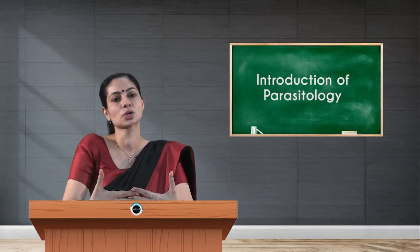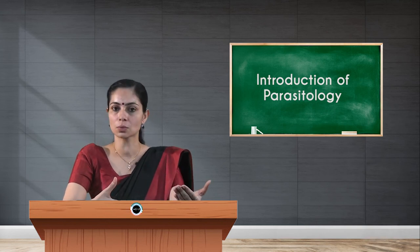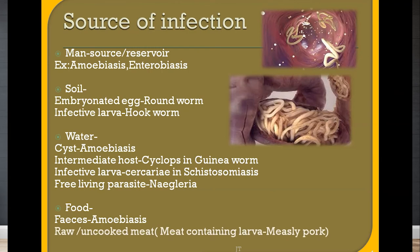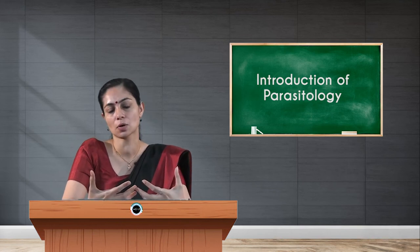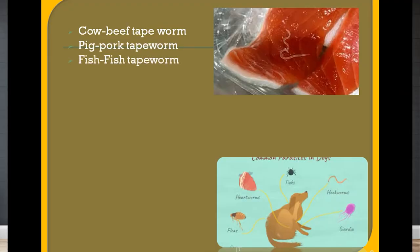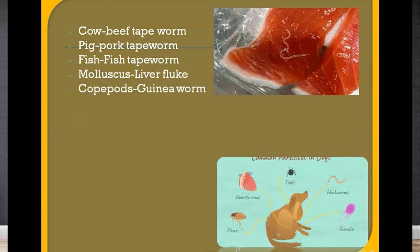Sometimes parasites directly enter through water — for example, Naegleria fowleri, a parasite present in swimming pools that directly enters the system on contact. Food is another source of infection; food may be contaminated through fecal contamination or from raw or uncooked meat. Beef tapeworm comes from infected cow, pork tapeworm from pig, fish tapeworm from fish, liver fluke from molluscs, and guinea worm from Copepods.